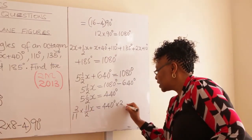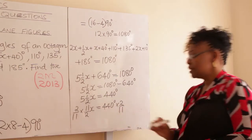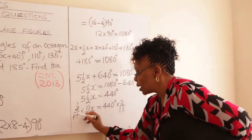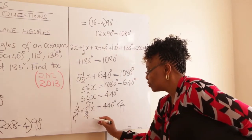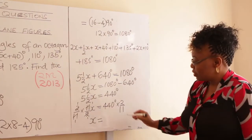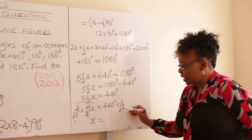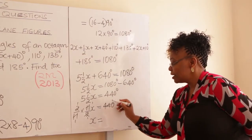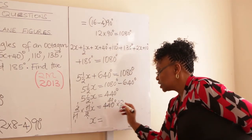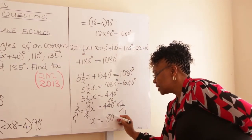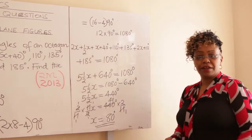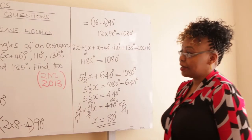To find x, multiply both sides by the reciprocal, 2 over 11. The fractions cancel, and x = 440 × (2/11) = 40 × 2 = 80 degrees. So x = 80°.